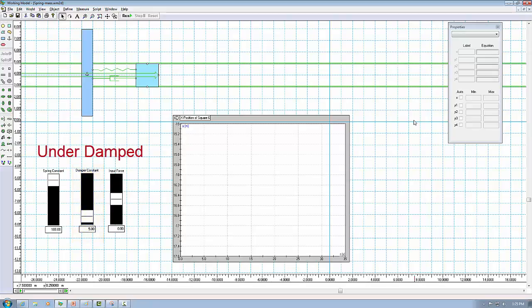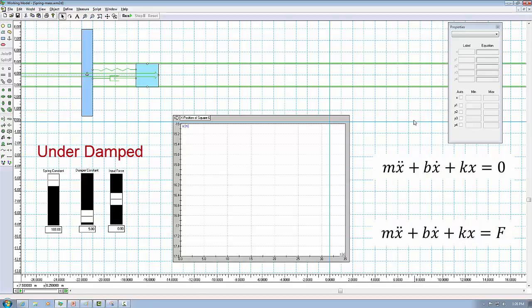So the system is underdamped according to our previous calculation. We learned in class that the input force changes the right-hand side of the equation of motion from 0 to F, which is the input force.